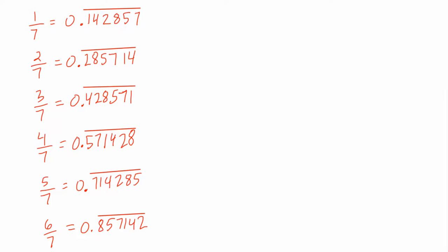All right, so in this video we're going to look at the fantastic pattern that's kind of staring right at us here in the decimal expansions—that means the equivalent decimals—of 1, 2, 3, 4, 5, and 6 sevenths. So you might want to pause the video and take a look for yourself and see what you can come up with.